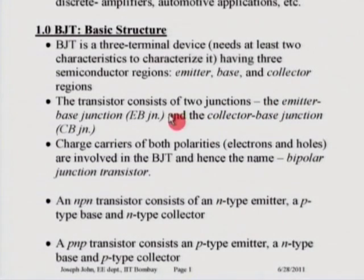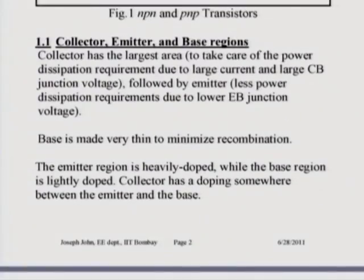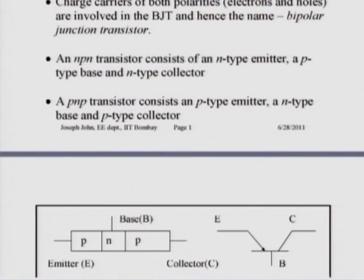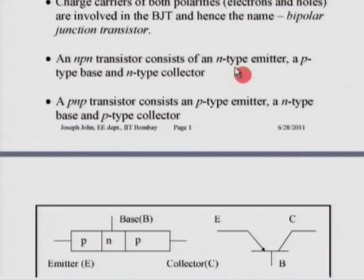In the last lecture by Professor Sharma, he talked about charge carriers — both electrons and holes. In a BJT, both electrons and holes are involved, and hence the name bipolar junction transistor. In an NPN transistor, it has an N-type emitter, a P-type base and an N-type collector, whereas a PNP transistor has a P-type emitter, an N-type base and a P-type collector.